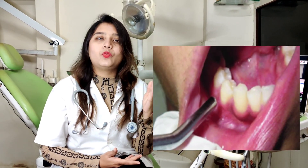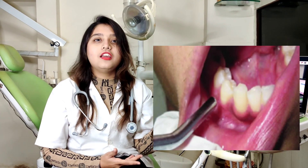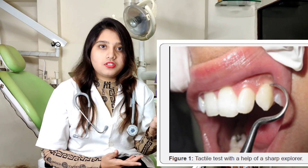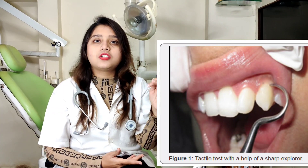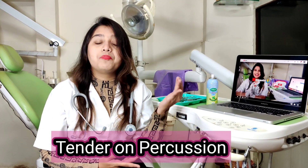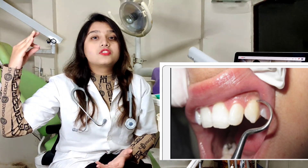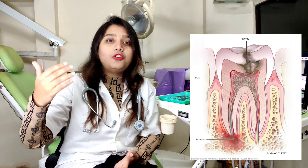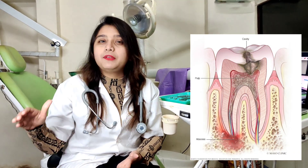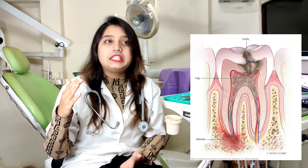Then we have the third method, which is tactile. What is tactile? It is basically checking the tooth surface by tapping on it. If I tap on the tooth surface and the patient has pain, we say that T.O.P. is positive. T.O.P. stands for Tender on Percussion. When this is positive, it means the patient has infection that has already passed from the pulp and is involving the periapical tissues, leading to infection.